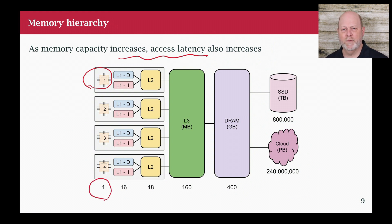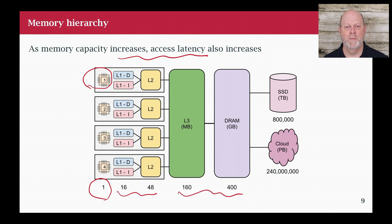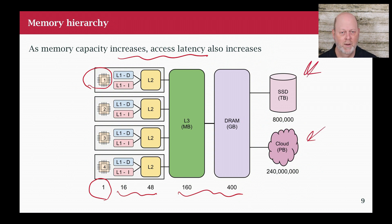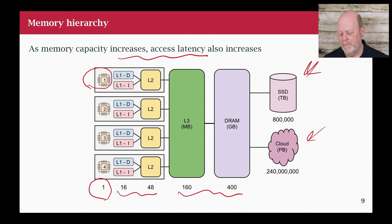These numbers are probably not exact for any particular chip model, but they're illustrative. Further out we have enormous amounts of space in SSDs and the network, and it takes a long time to get out there — expensive in terms of latency and wait time. We get around that some by having the CPU try to reorder loads and start them early so results are available sooner, but there's a limit to that.